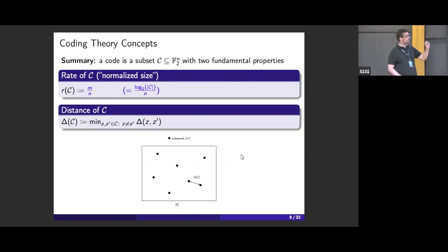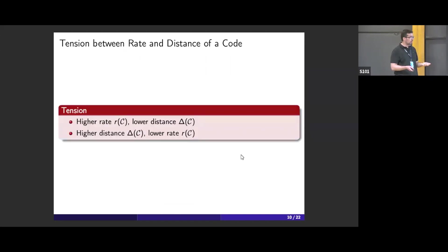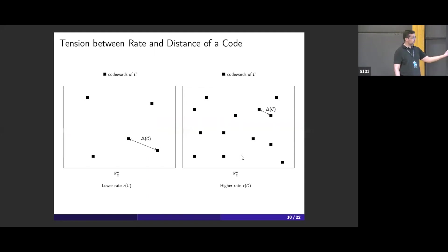Binary codes have two important properties. The first one is the rate, which is the fraction of information symbols, or equivalently the logarithm of the size of the code divided by N. So it's a notion of normalized size. And we have the distance, the minimum distance of the code. We would like, ideally, to make these two parameters as large as possible. As you might suspect, there is tension. If you try to pack a lot of code words in this space, the distance might suffer, and vice versa. If you try to pack fewer code words, you might be able to make them spread out and the distance might be larger.